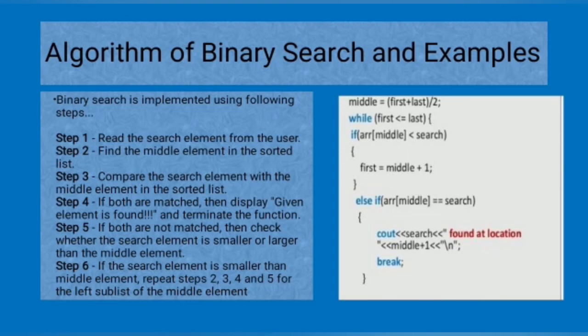Binary search is implemented using these steps: read the search element from the user and find the middle element in the sorted list. Compare the search element with the element in the sorted list. If both are matched then display given element and terminate the function. If both are not matched, then check whether the search element is smaller or larger than the middle element. If the search element is smaller than the element, repeat steps 2, 3, 4, and 5 for the left sublist of the middle element.